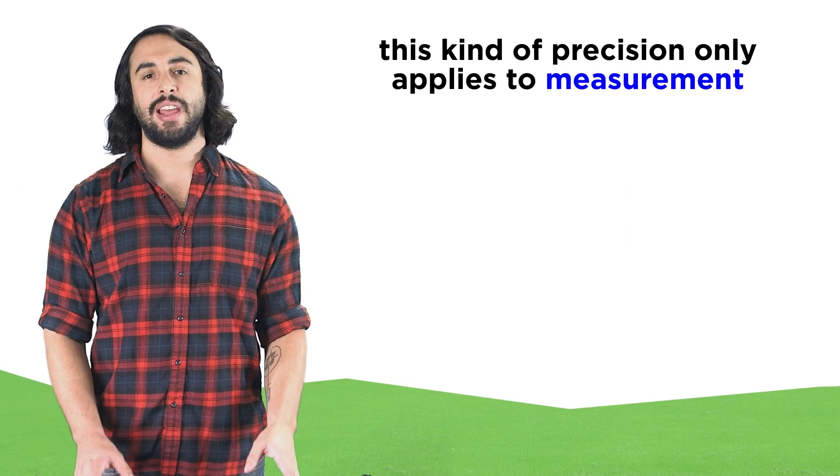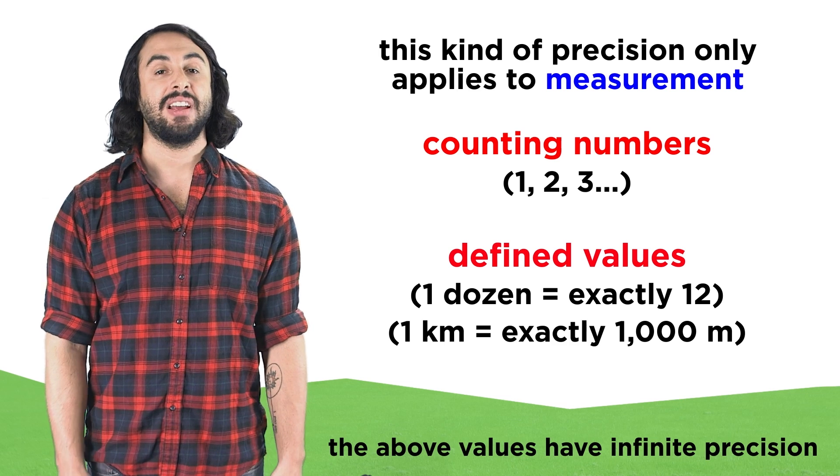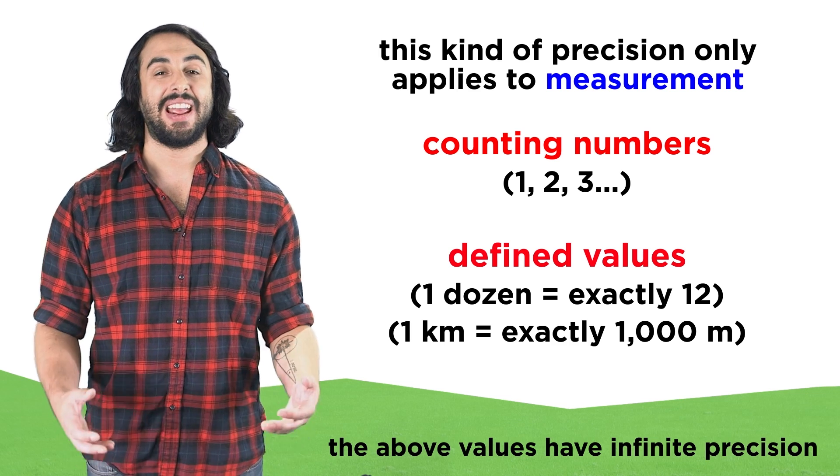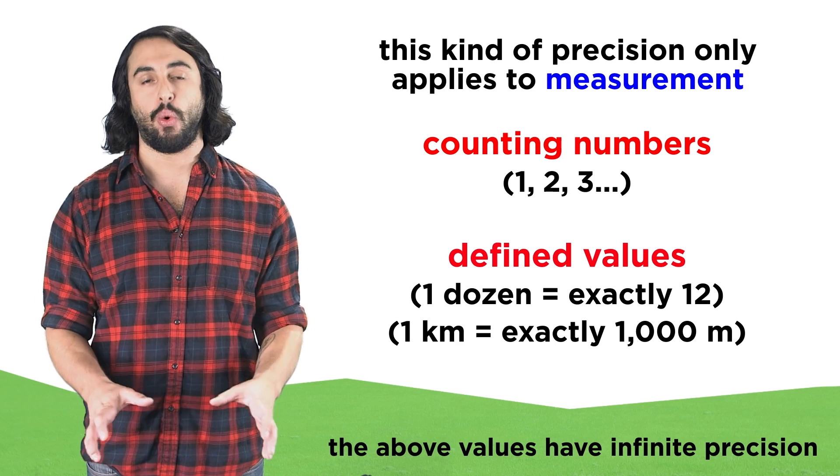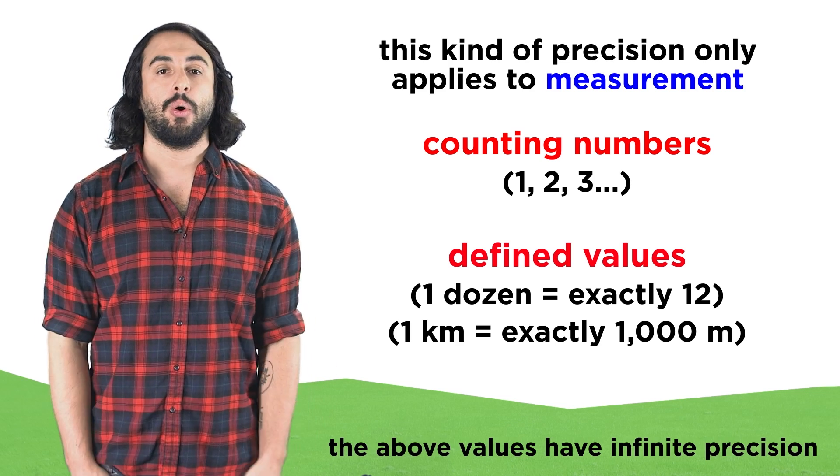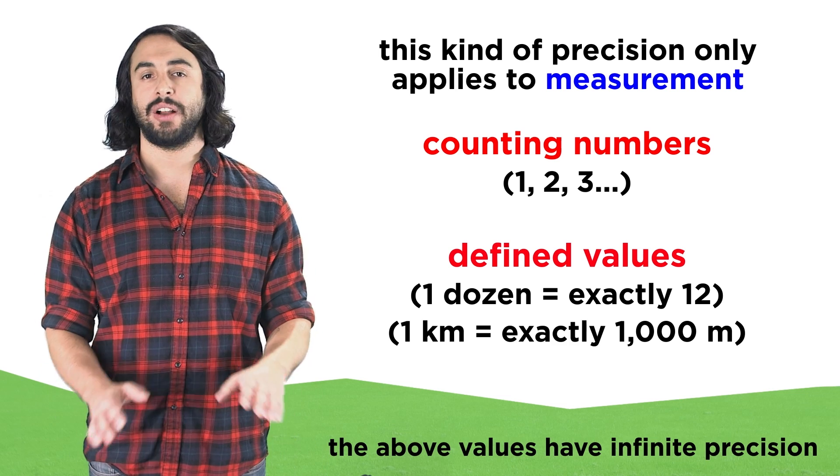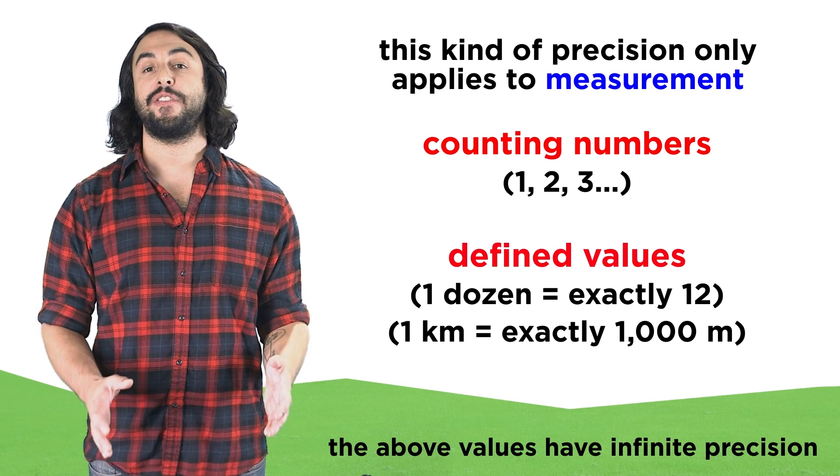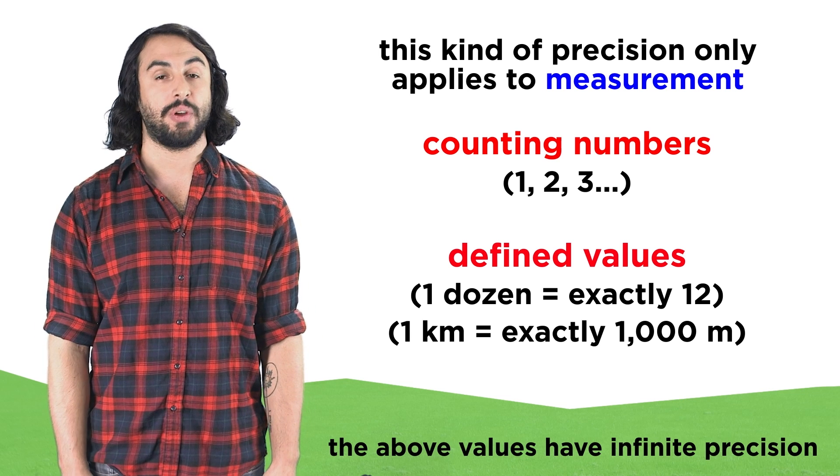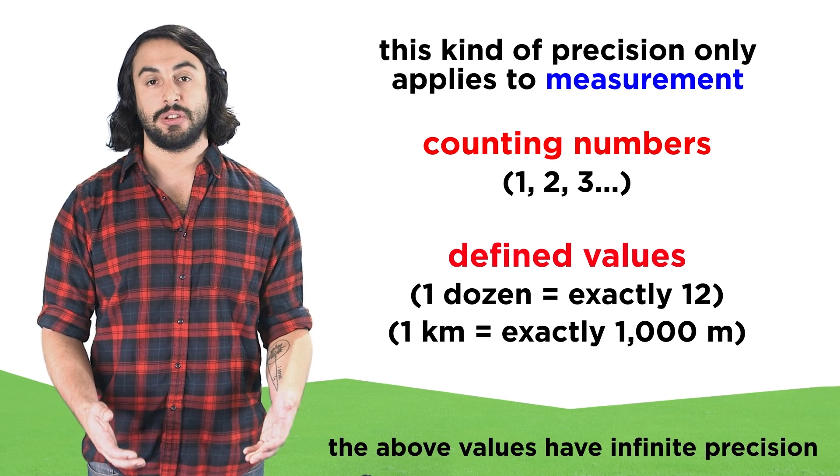But this concept only applies to measurement. Counting numbers and defined values have infinite precision, like the way that there are exactly twelve in a dozen, or exactly one thousand meters in a kilometer, with no uncertainty of any kind. The precision of measurements will affect the way we do calculations with our data, but these infinitely precise values will not.